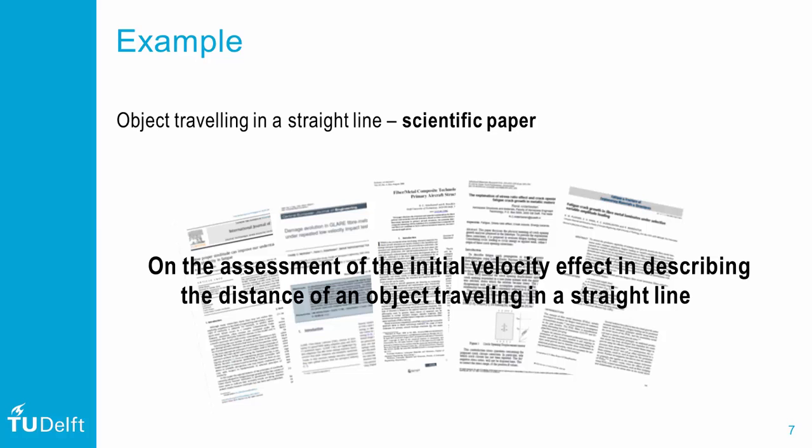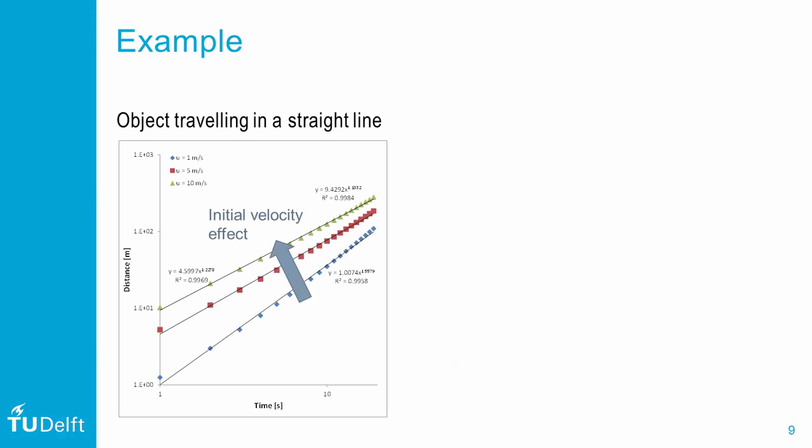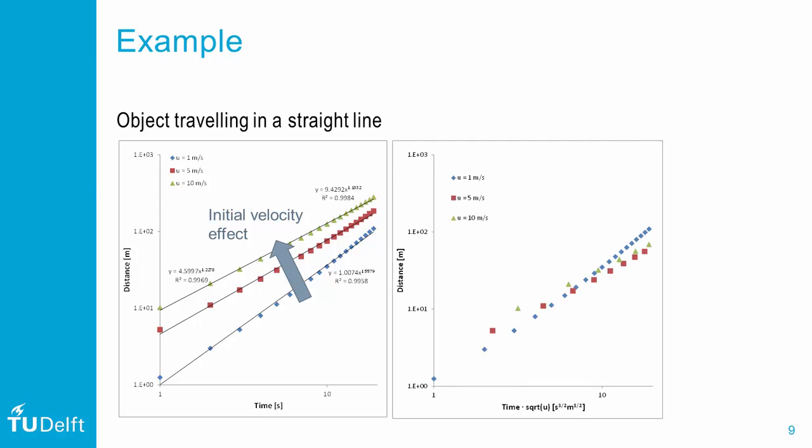However, there is another approach to this problem. Apparently not only time is the governing parameter here, but also the initial velocity. So when we go back to this graph we can try to find the parameter in the x axis that includes both time and the initial velocity. Here we are, with time times square root of initial velocity, all three curves collapse.